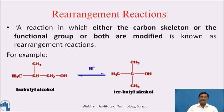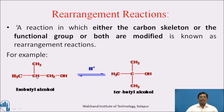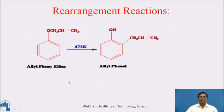Next is rearrangement reaction. A reaction in which either the carbon skeleton, the functional group, or both are modified is known as a rearrangement reaction. For example, isobutyl alcohol in the presence of acid gives tertiary butyl alcohol — a rearrangement of species occurs. The hydroxyl group is transferred to a particular carbon, forming a C-OH bond, and simultaneously the carbon carrying hydrogen is promoted, forming a CH3 group. A second example is allyl phenyl ether, which when heated at about 473 Kelvin gives allyl phenol.